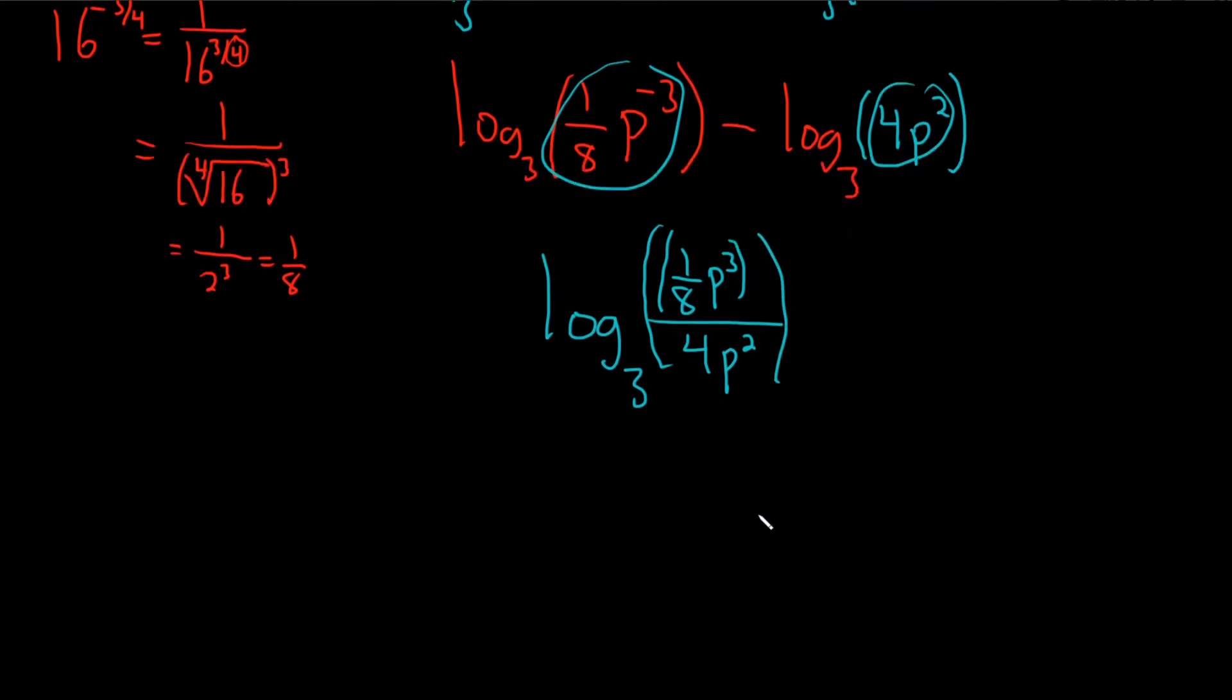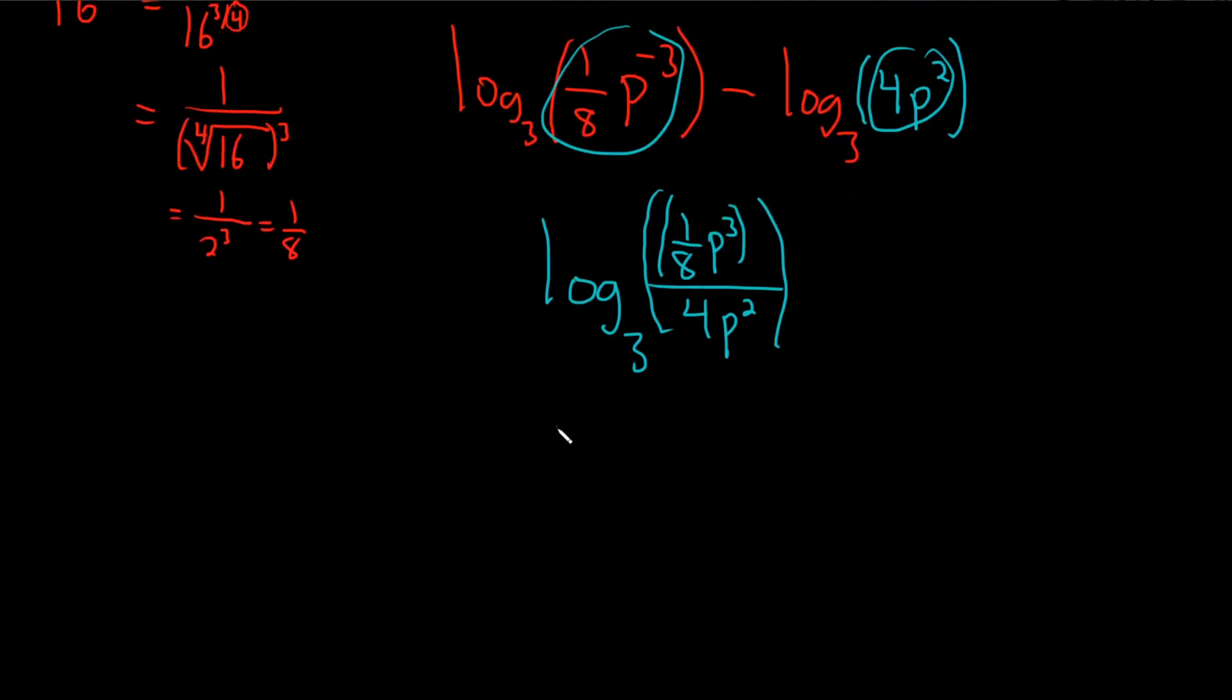So let's clean this up. So this will be log base 3. First, let's do the 1 eighth over 4. If you have 1 eighth divided by 4, that's really 1 eighth times the reciprocal of 4, which is 1 fourth. So you just get 1 over 32. So this will be a fraction, and we'll get a 32 on the bottom.